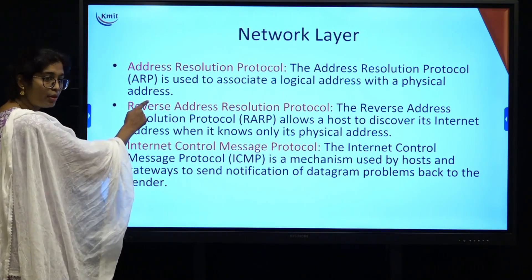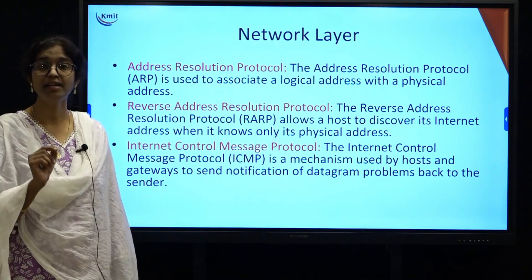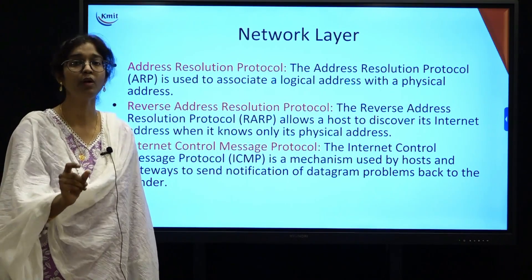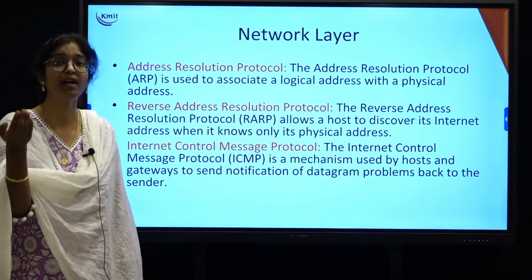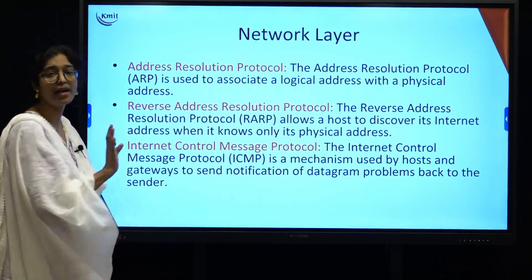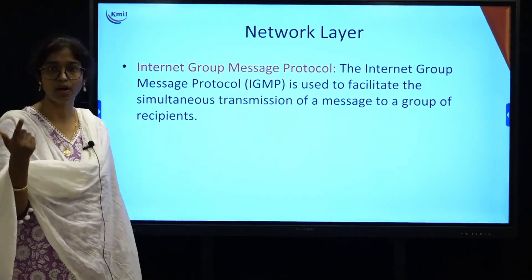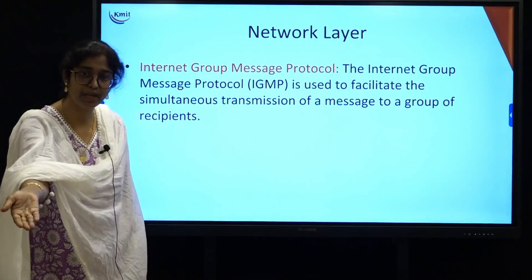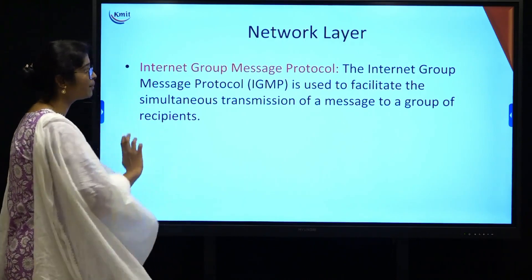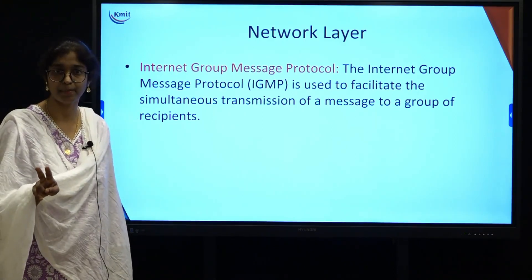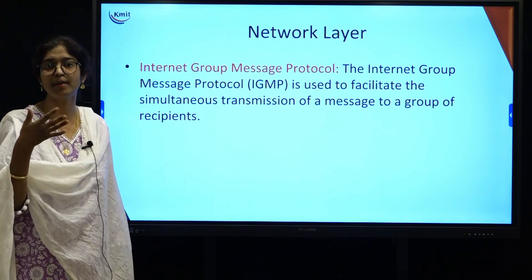ICMP stands for Internet Control Message Protocol. It provides control messages to the IP protocol — for example, reporting that a datagram was not received or that there is a communication problem. Error reporting messages are provided by ICMP. IGMP stands for Internet Group Message Protocol, used when you want to simultaneously send messages to a group of recipients on the internet. So the internet layer has four protocols: IP (main), ARP, RARP, ICMP, and IGMP.